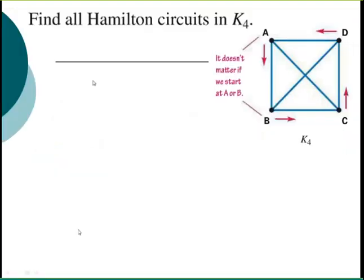Now we're going to find all the Hamilton circuits in K_4. It doesn't matter where we start, but I go from A down to B, over to C, up to D, and then diagonal. There are a few different directions I can go - from A I can either go down to B, or to D, or to C.